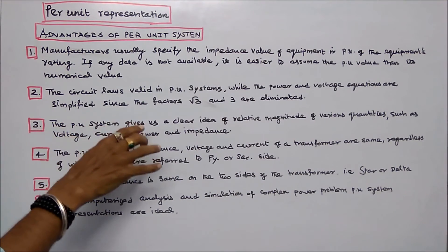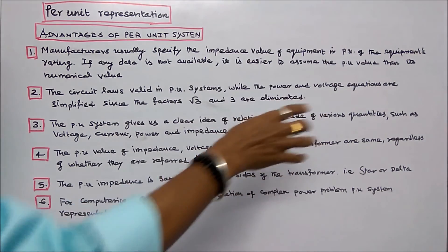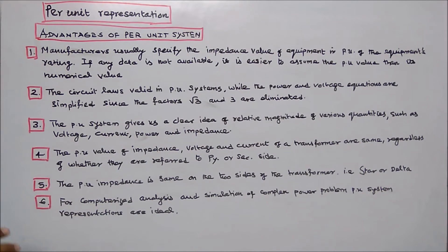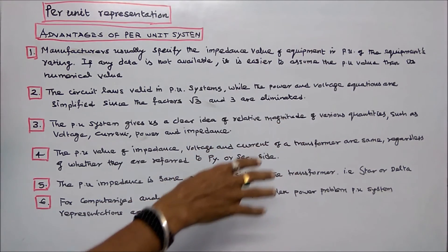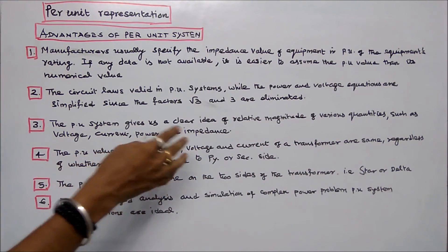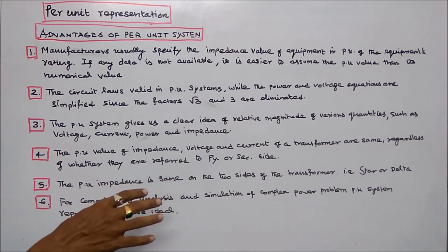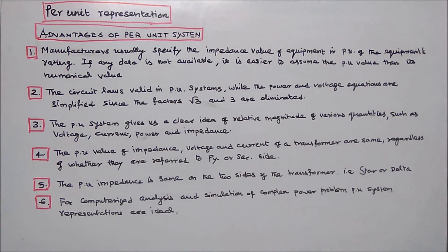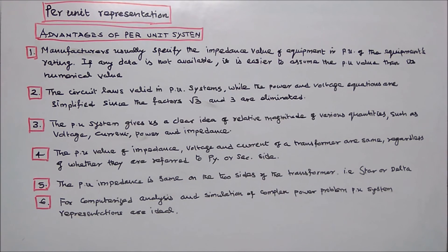Number 3: The per unit system gives us a clear idea of relative magnitude of various quantities such as voltage, current, power and impedance. Number 4: The per unit value of impedance, voltage and current of a transformer are same regardless of whether they are referred to primary side or secondary side. Number 5: The per unit impedance is same on the two sides of the transformer, that is star or delta. Number 6: For computerized analysis and simulation of complex power problems, per unit system representations are ideal.